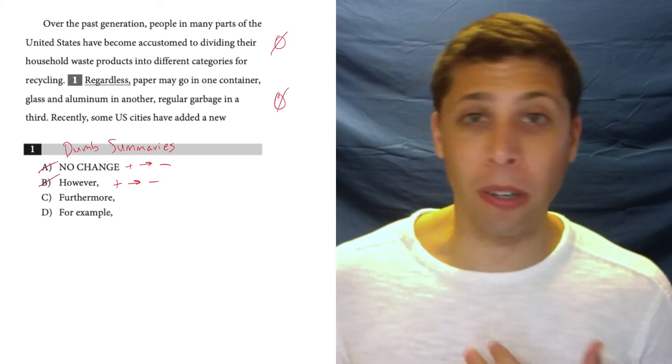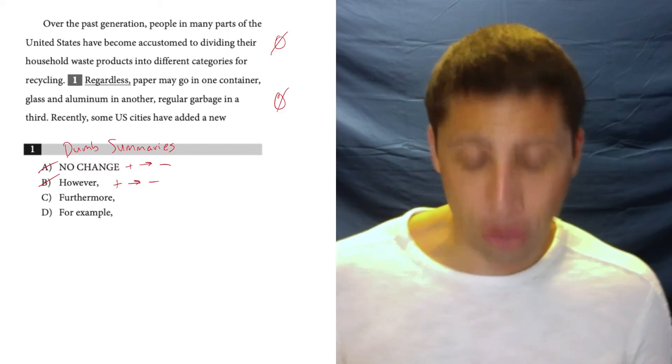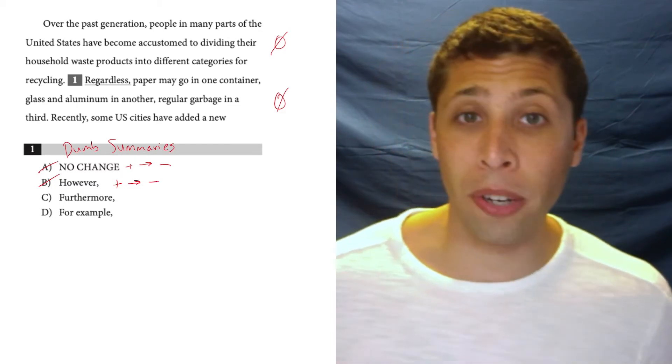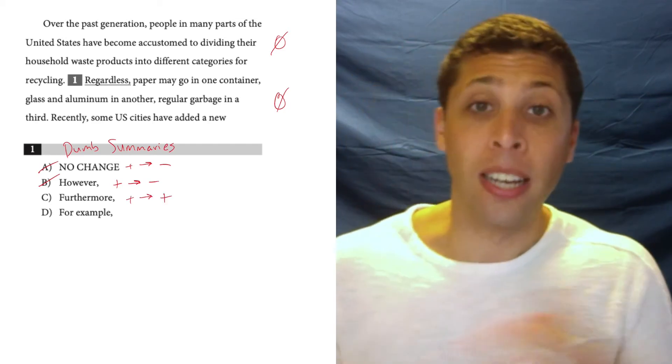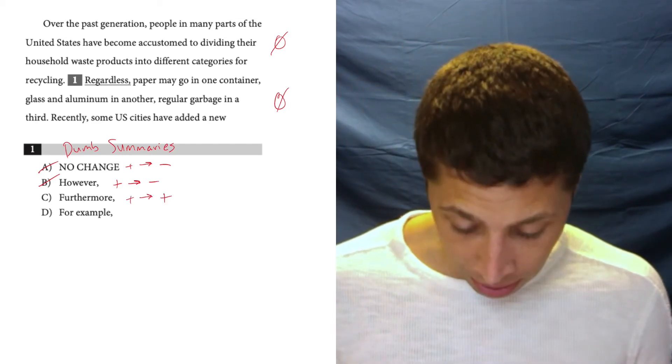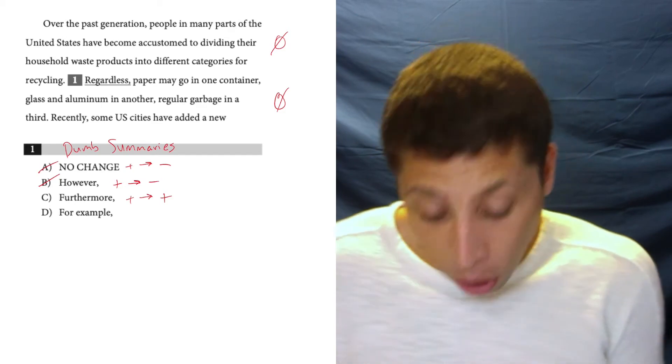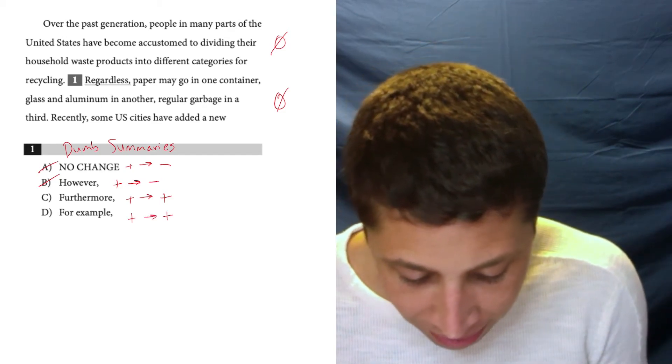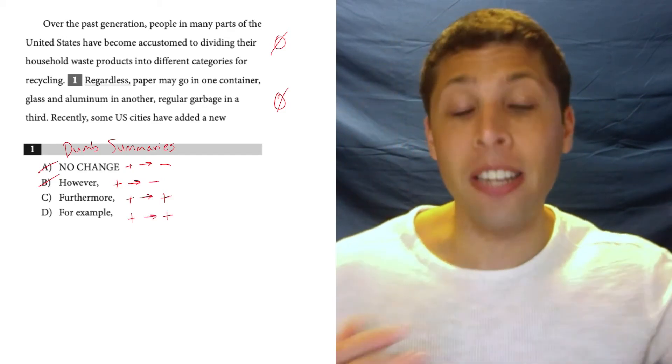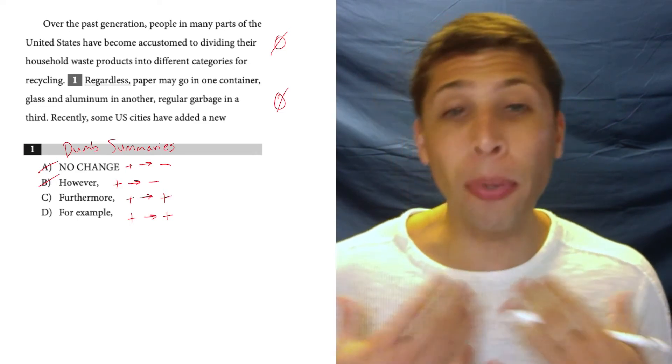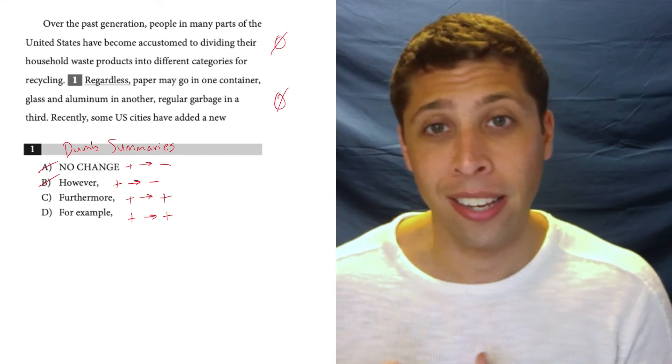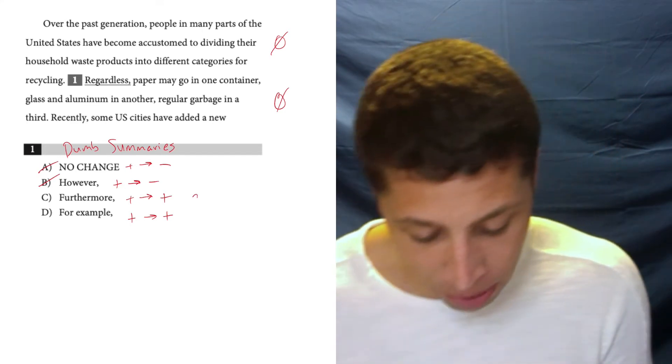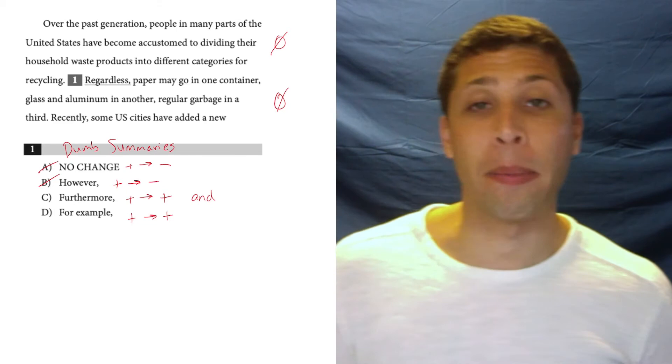Then we get into a little bit more of a debate, right? So, furthermore, a dumb summary of what that word means would be something like positive to positive, right? It's a continuation of a point. Whereas, for example, also maybe does have that same connotation. It's continuing a thought, but it brings a little bit more of a specificity to the situation, right? It's not just like an and. That might be a good way of thinking about that.